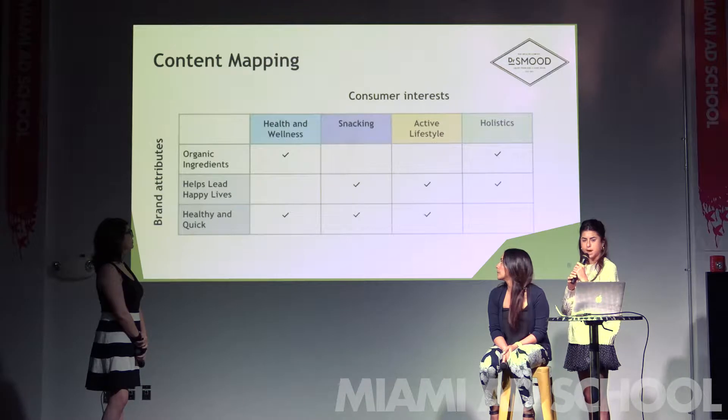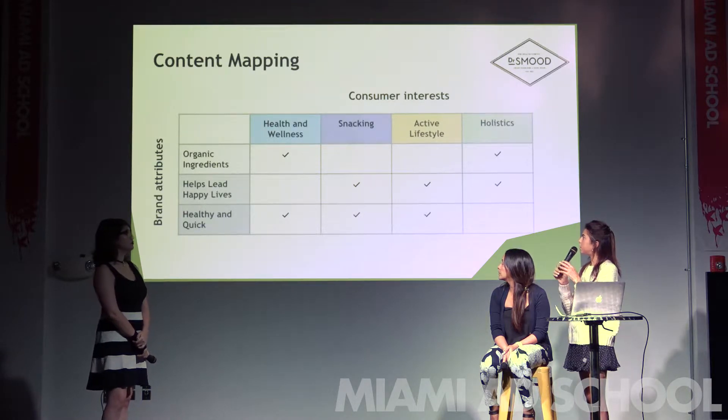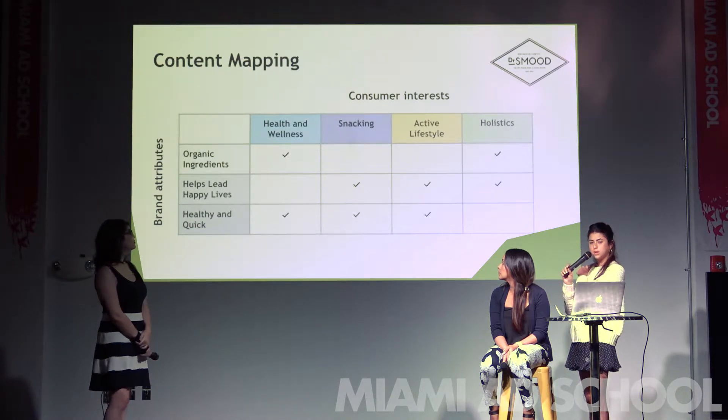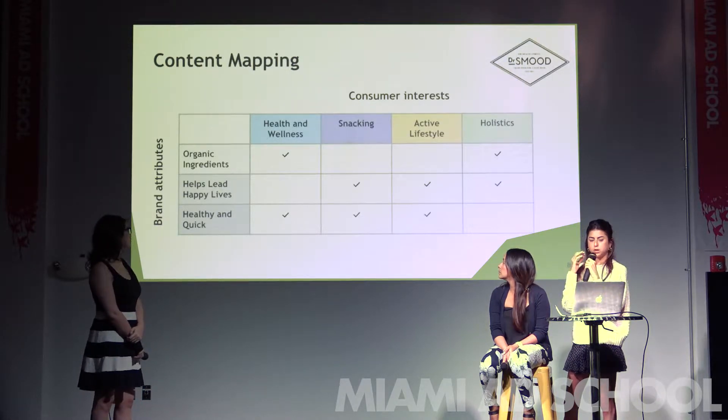In content mapping, we see how consumer interests and brand attributes connect. The organic ingredients — a very big attribute of Dr. Smooth — ties in with health and wellness interests and the holistic view of consumers. Dr. Smooth helping people lead happy lives intersects with snacking experience, active lifestyle, and holistics. And the fact that it's healthy and quick, a stop along the way, ties in with health and wellness, snacking, and active lifestyle.